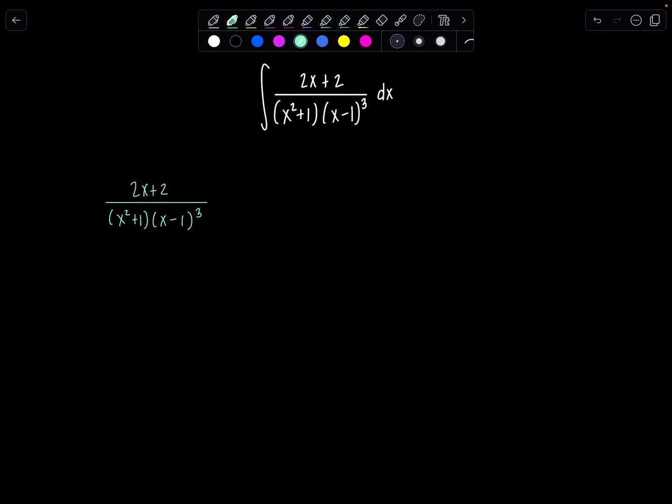So x squared plus 1 is an irreducible quadratic. So when we find the partial fraction decomposition, the form, remember, we need ax plus b in the numerator, and then x minus 1 cubed, that's a repeated linear factor. So what you have to do is write it out three times. Starting with x minus 1 to the first, then you just work your way up until you hit the degree that you see there in the denominator. And then each of the numerators just has a constant. So c, d, and e.